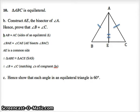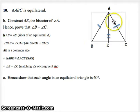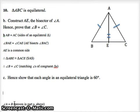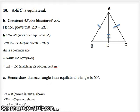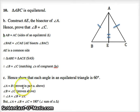Now part C says: hence show that each angle in an equilateral triangle is 60 degrees. In part A we proved that angle A equals angle B, and in part B we proved that angle B equals angle C. So angle A equals angle B equals angle C, because B is common to both. We can state: angle A equals angle B (proven in part A) and angle B equals angle C (proven in part B), therefore angle A equals angle B equals angle C.